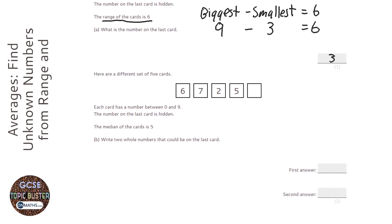Looking down at the next question, it says there's a different set of five cards, still numbered between zero and nine. But it says the median of the cards is five, and write down two whole numbers that could be on the last card.